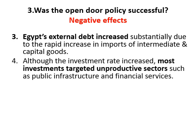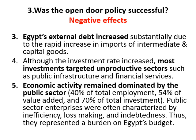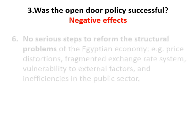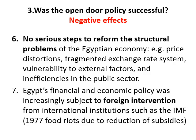Although the investment rate increased, most investment targeted unproductive sectors such as public infrastructure and financial services, so economic activity remained dominated by the public sector — which accounted for 40 percent of total employment, 54 percent of value added, and 70 percent of total investment. Public sector enterprises were often characterized by inefficiency and loss-making, and thus represented a burden on Egypt's budget. There was also no serious effort to address the structural problems of the Egyptian economy, which suffered from price distortions, a fragmented exchange rate system, and inefficiency in the public sector. Egypt's financial and economic policy was also subject to foreign intervention from international institutions such as the IMF.